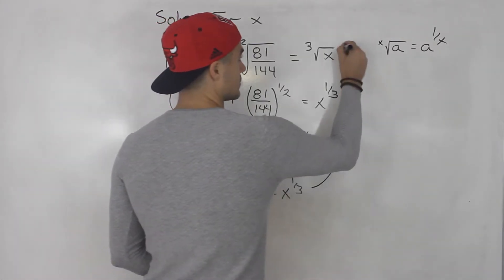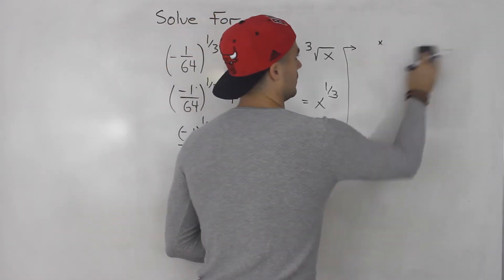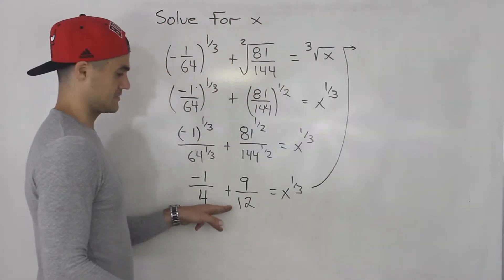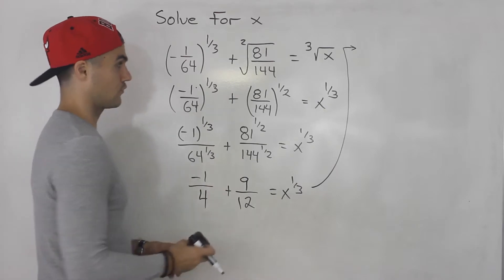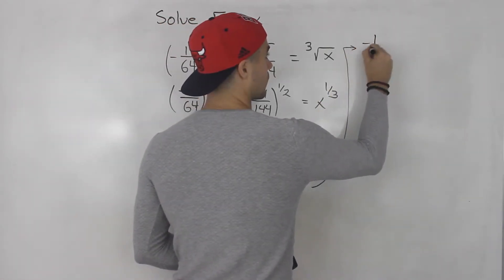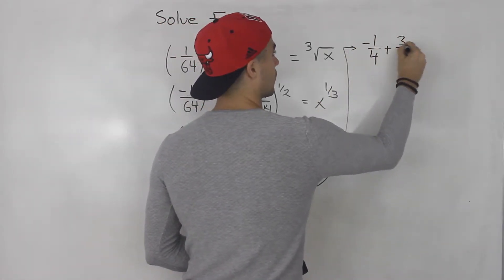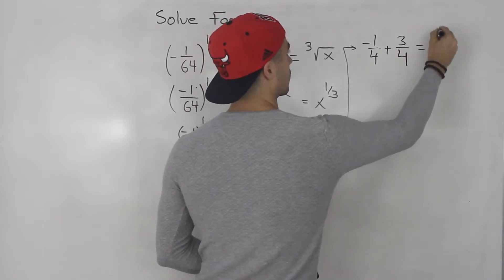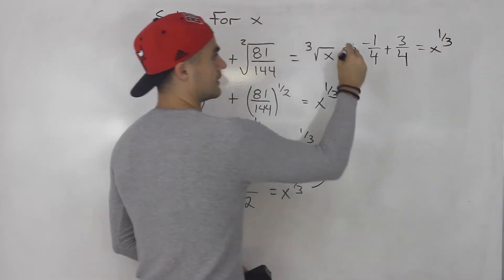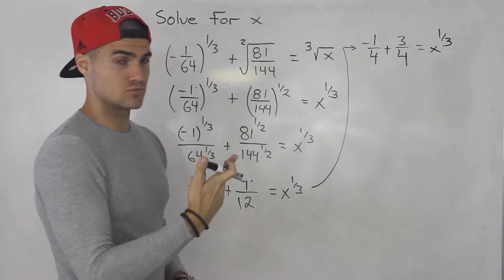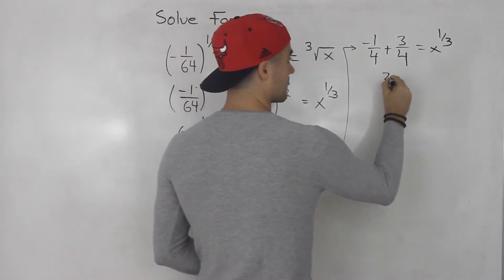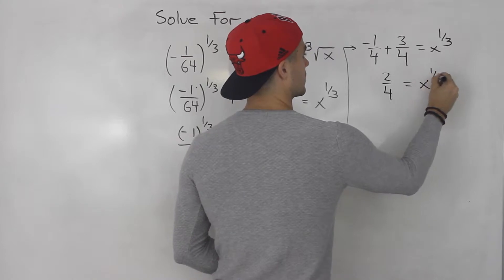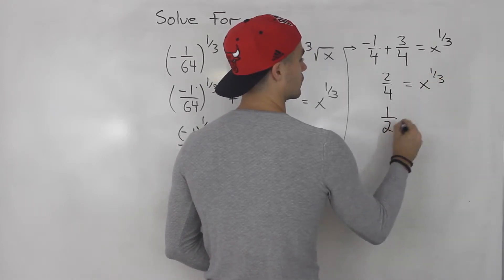Let's continue. 9 over 12 simplifies to 3 over 4. So we'll have negative 1 over 4 plus 3 over 4 is equal to x to the power of 1 over 3. Negative 1 plus 3 is 2, so 2 over 4 equals x to the power of 1 over 3, which is equal to 1 over 2.